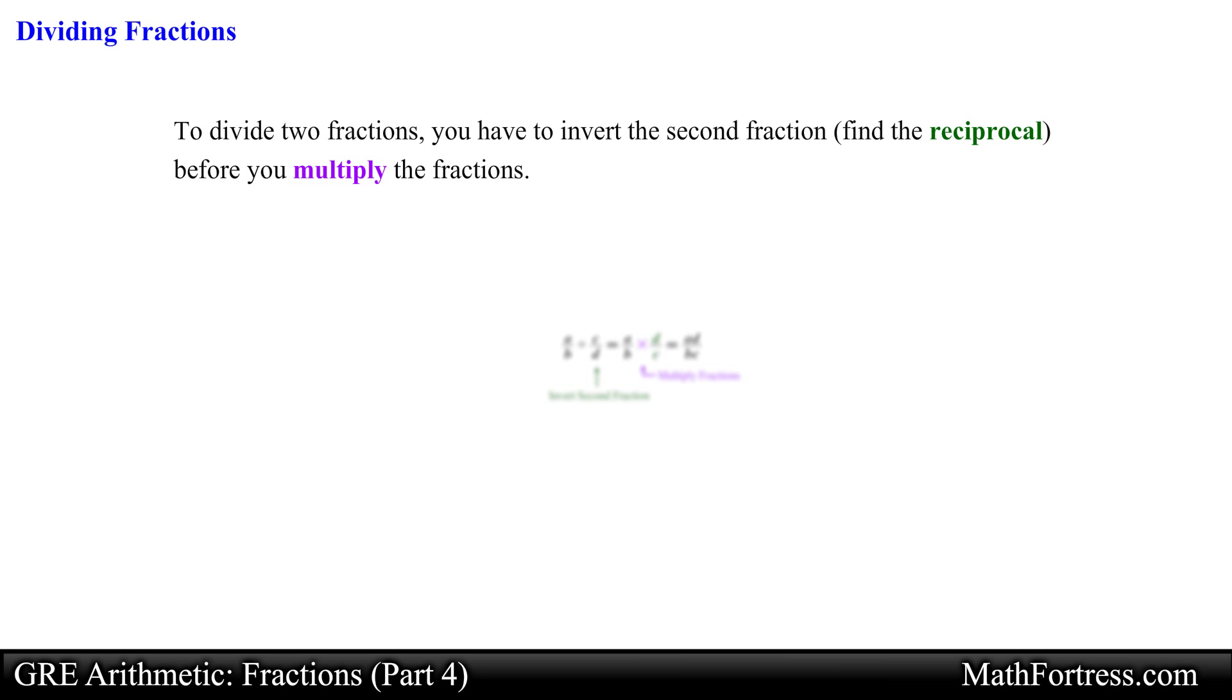For example say we wanted to divide the following fractions, 17 over 8 divided by 3 4ths. We first need to invert or find the reciprocal of the second fraction. The reciprocal of 3 4ths is 4 3rds. All we need to do is switch the numerator and denominator with one another. At the same time this division operator can be replaced by a multiplication operator. At this point the division problem becomes a multiplication problem.